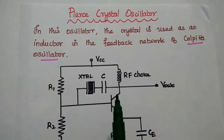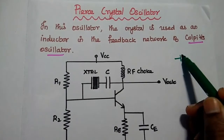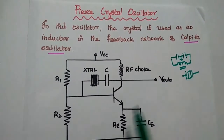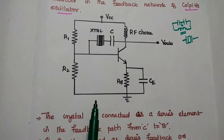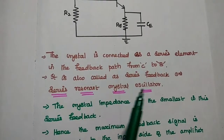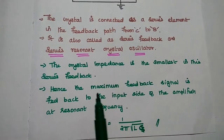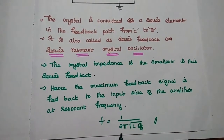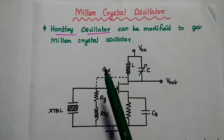In the Pierce crystal oscillator, the crystal is used as an inductor in the feedback network of the Colpitts oscillator. In the Colpitts oscillator we have two capacitors and one inductor — here that inductor is replaced with the crystal. The crystal is connected as a series element in the feedback path from collector to base, also called a series resonant crystal oscillator. The crystal impedance is smallest at series resonance, so the maximum signal is fed back to the input. The frequency equals 1 / (2π√(L·CS)); only series resonant frequency is available.